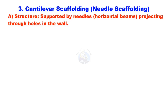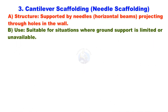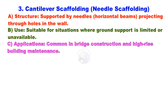Cantilever Scaffolding, or Needle Scaffolding. It is supported by needles or horizontal beams projecting through holes in the wall, suitable for situations where ground support is limited or unavailable. Common applications include bridge construction and high-rise building maintenance.